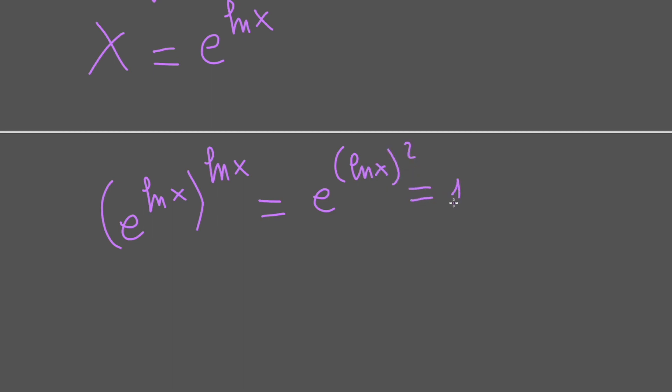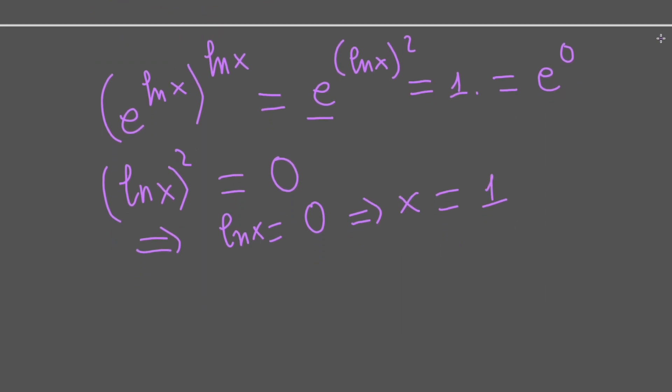This equals 1. Since e is a constant, when e raised to the power of (ln x) squared equals 1 equals e to the zero, it means (ln x) squared equals 0. So ln x equals 0 as well, then x equals 1.